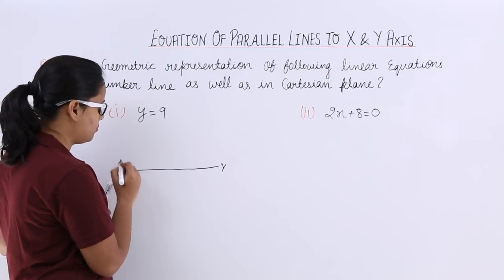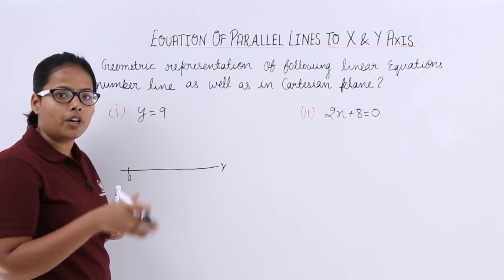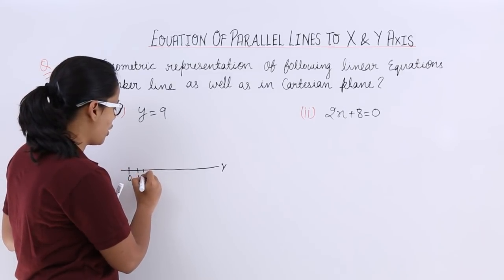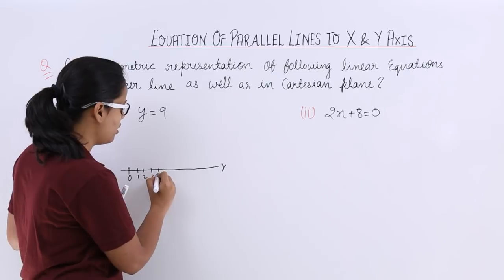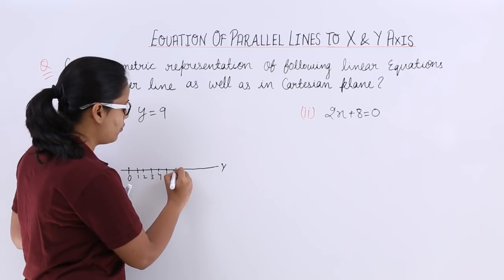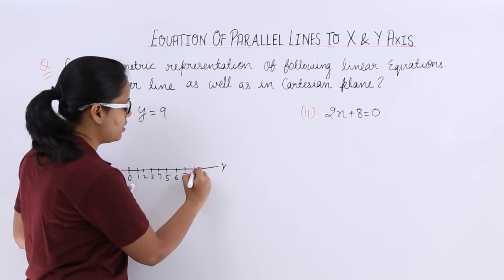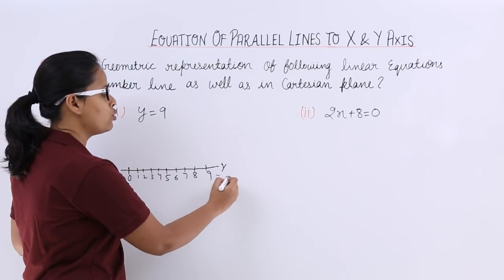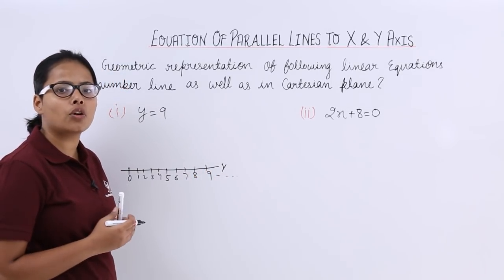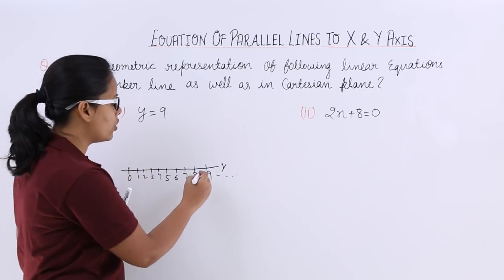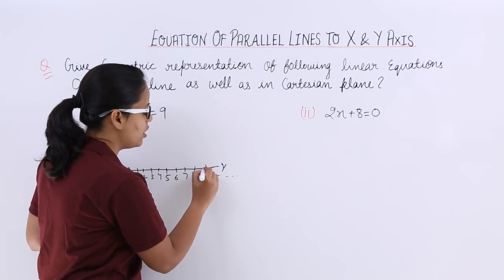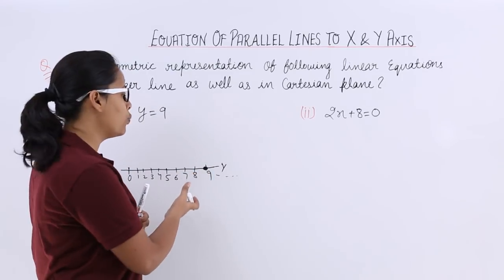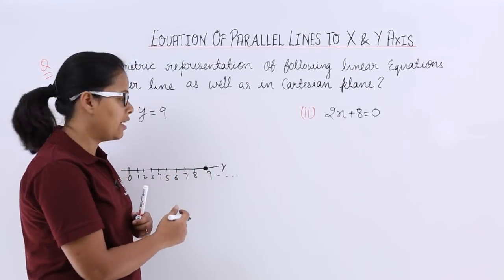Consider this is the origin, where two lines intersect. Now mark points 2, 3, 4, 5, 6, 7, 8, 9 and so on. But we need to locate y is equal to 9, so here you can see this is y is equal to 9. That's how you will locate a point on a number line.